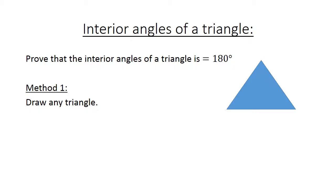Interior angles of a triangle. Prove that the interior angles of a triangle equals 180 degrees. Method 1: Draw any triangle. Then tear off the angles of the triangle or cut with scissors.